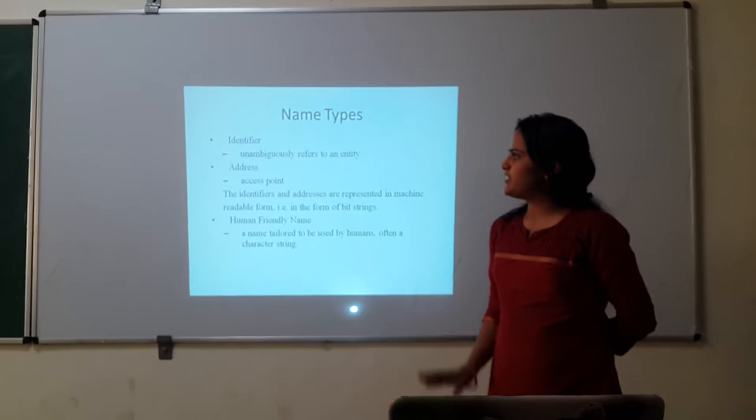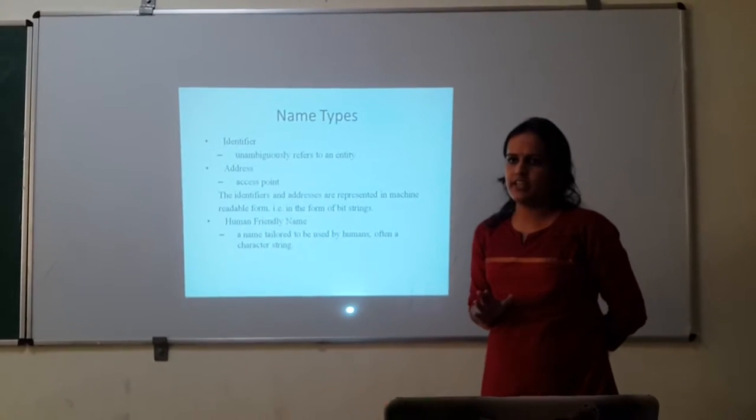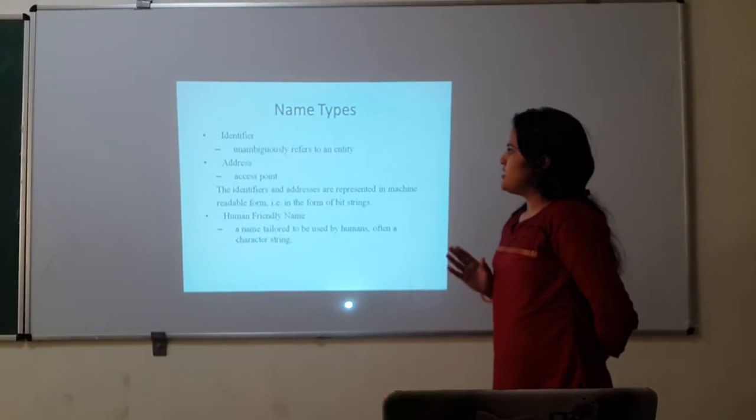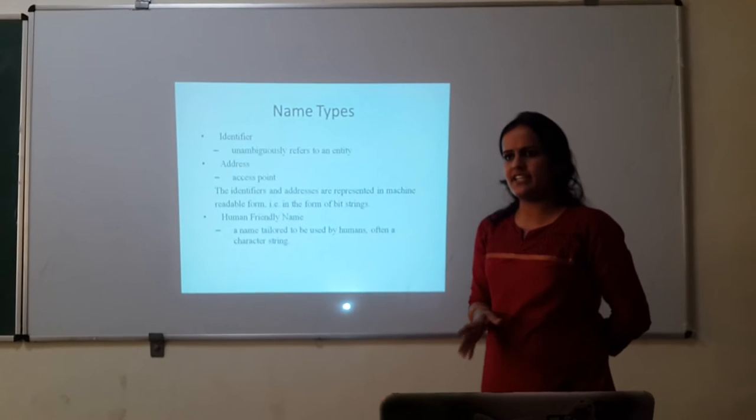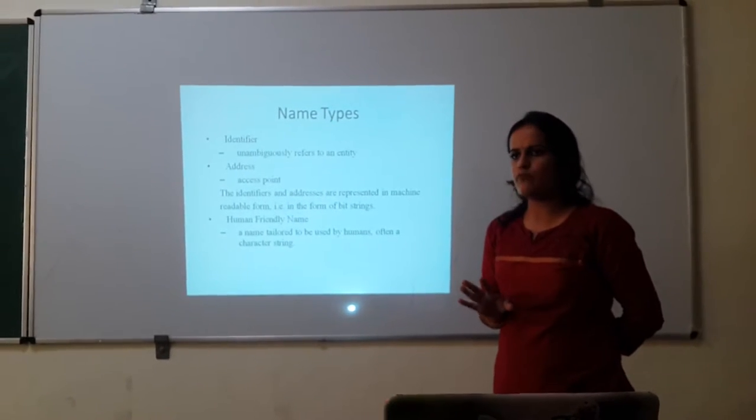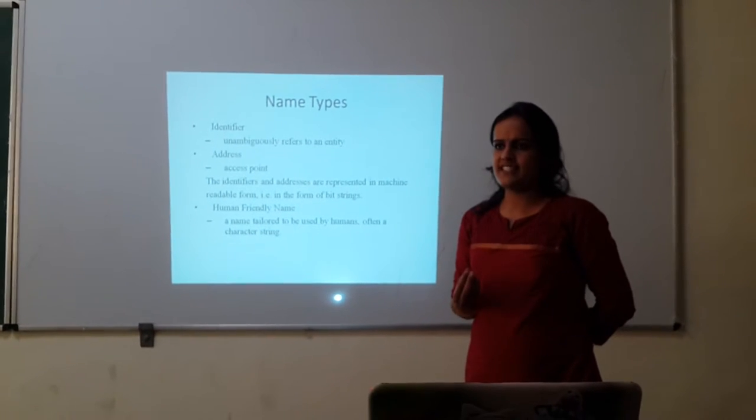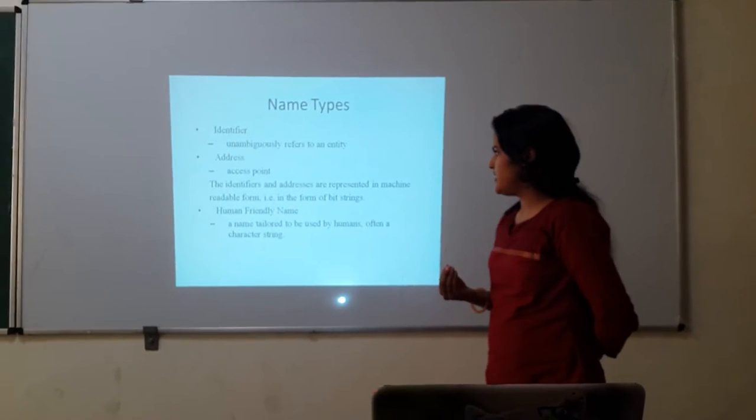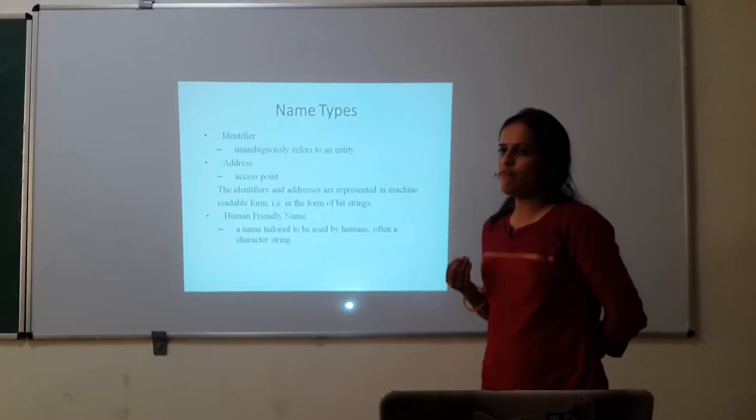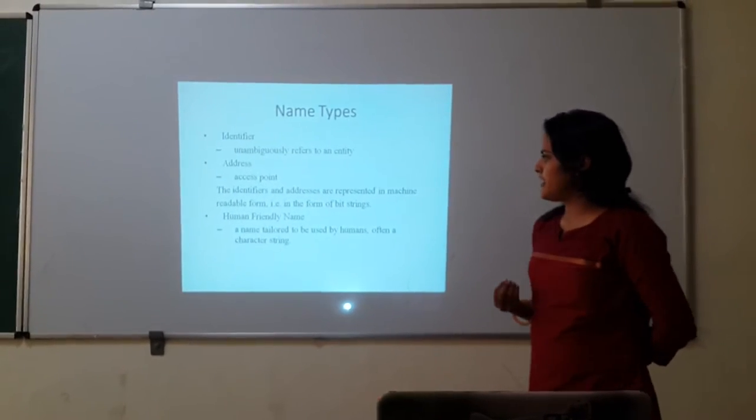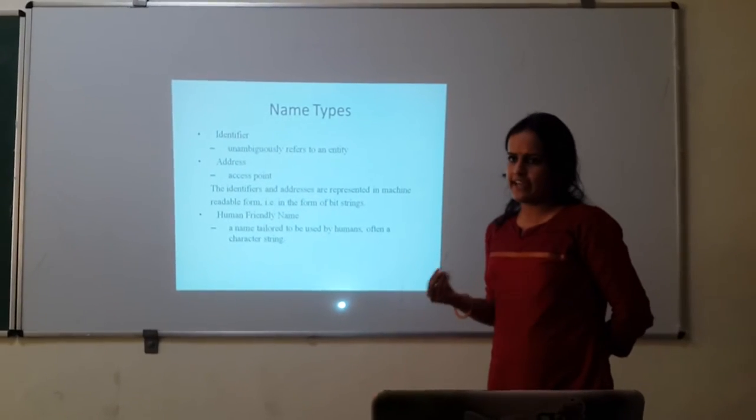Then name types. There are basically three types of names: identifier, address and human friendly names. Identifiers are basically used to refer to a particular entity. Each entity having at most one identity. Then address is used as its access point. The identifiers and addresses are represented in machine readable form, that is in the form of bit stream, whereas human friendly name is used by humans and it is in the form of character stream.